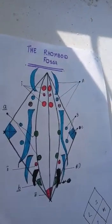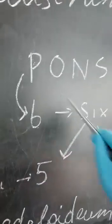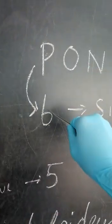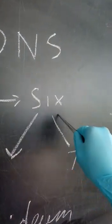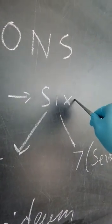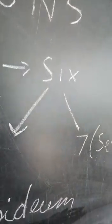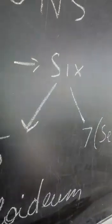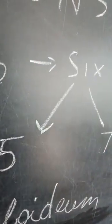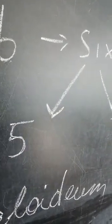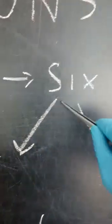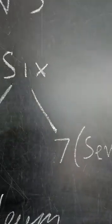Write 'pons' and invert the P — it looks like 6. First write 6. If this gives an X shape, it is a motor nerve, because X means motor. Then the first letter S — the shape of S is like five, so the fifth cranial nerve. And the first letter S also gives seven, so that is the facial nerve.